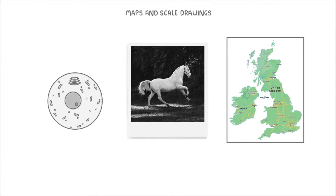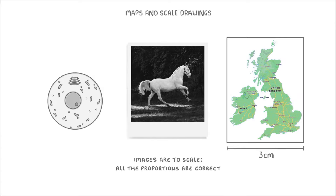If you look at these three images, what they all have in common is that they're representing things much larger or smaller than the images themselves. For example, the United Kingdom isn't really 3cm wide, and neither is a cell or a horse. We've just made them smaller or larger than the real things so that we can show them neatly on the space of the screen. However, the important thing to notice is that the images are to scale, which means that all of the proportions are correct. For example, the horse's height relative to its length is correct.